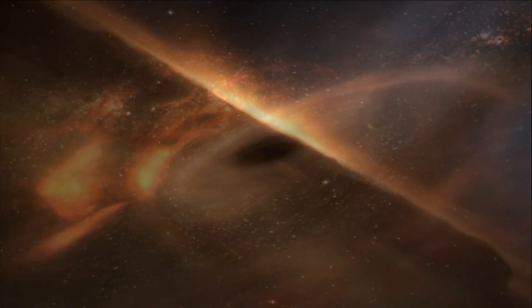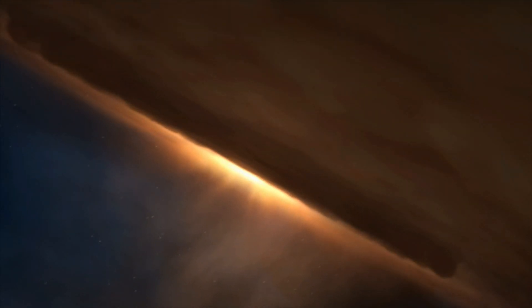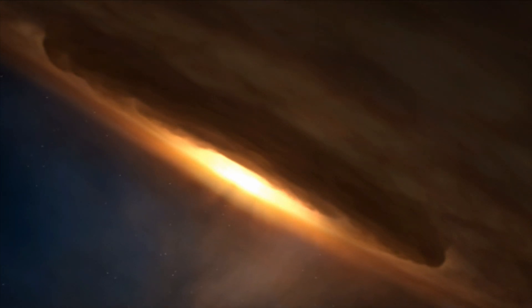Now, how do intermediate mass black holes form? As the name implies, intermediate mass black holes fall between stellar mass black holes and supermassive black holes. This type of black hole is not too small, not too big, but it is rare.